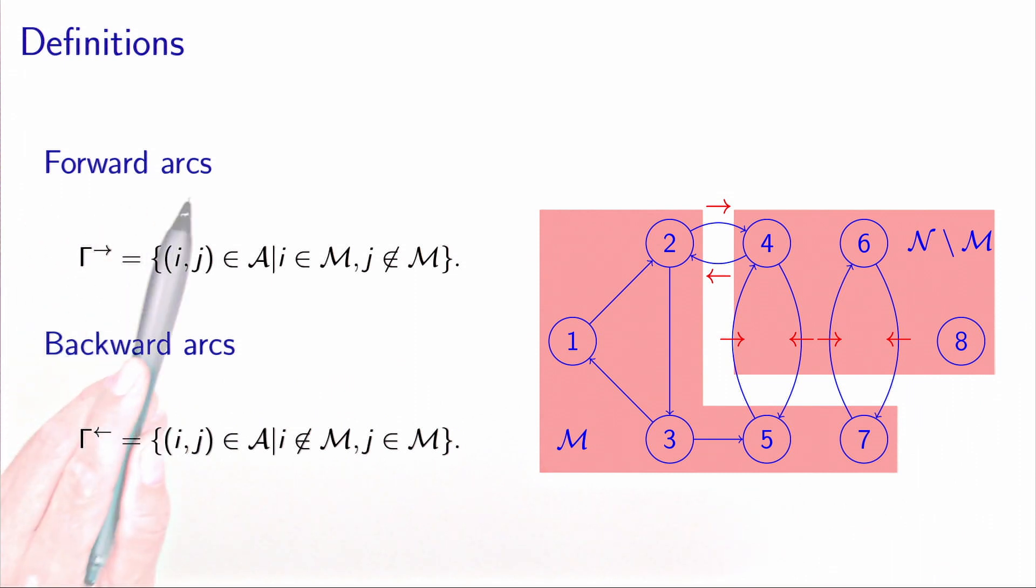So we will call forward arcs all the arcs (i,j), such that i is in the left bank, which means in set M, and j is on the right bank, which means not in set M. The examples on the picture are the arc (2,4), the arc (5,4), and the arc (7,6). Similarly,